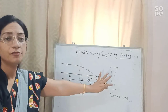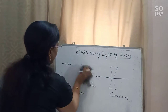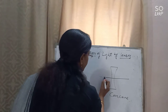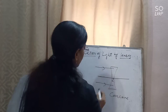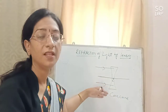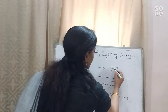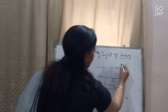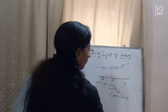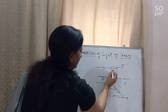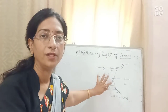For the concave lens, we draw a principal axis. When a ray parallel to the principal axis passes through the concave lens, it will diverge — it will spread out. The focus point F is marked, and when we extend the diverging rays back, they meet by a dotted line on the back side, giving a virtual focus point behind the lens.